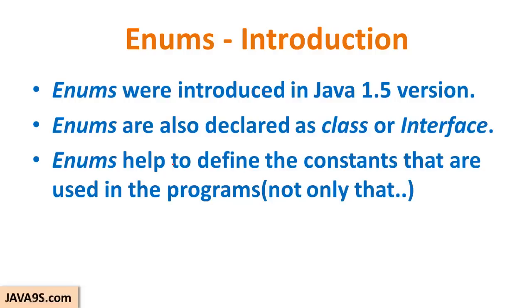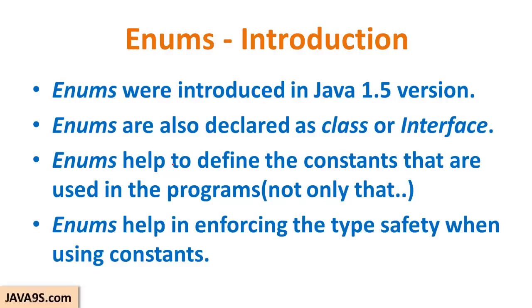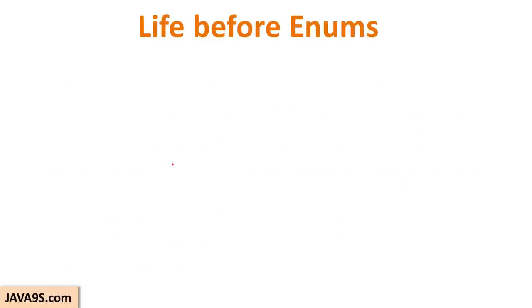The primary motto of enums was to define constants that are used in programs, but enums are much more powerful than that. The most important part of declaring enums was to enforce type safety when using the constants. To understand the importance of enums, we should know how the need for enums came into picture.